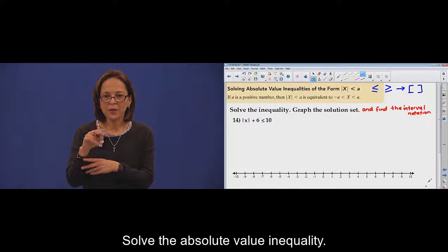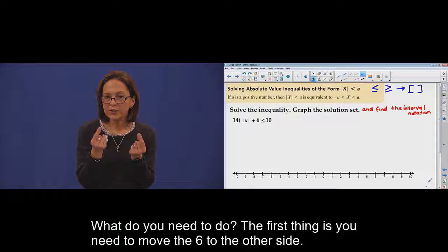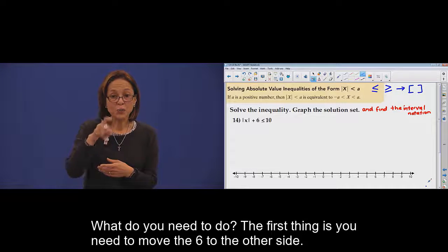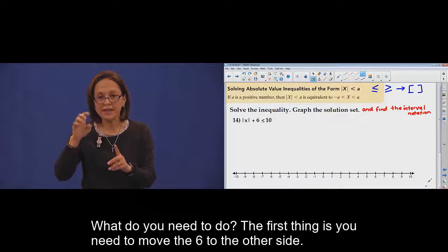Solve the absolute value inequality. What do you do? First thing, you must move the plus 6 to the other side.